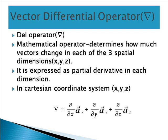First we are going to see the vector differential operator, which is also called the del operator. This mathematical operator determines how much vectors change in each of the three spatial dimensions. Here, the three dimensions we have chosen are x, y and z — a Cartesian coordinate system. In order to find that, the partial derivative is used in each dimension.